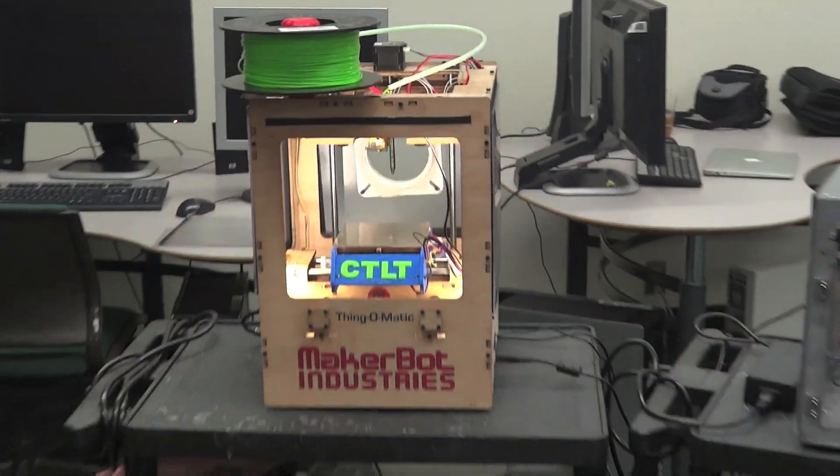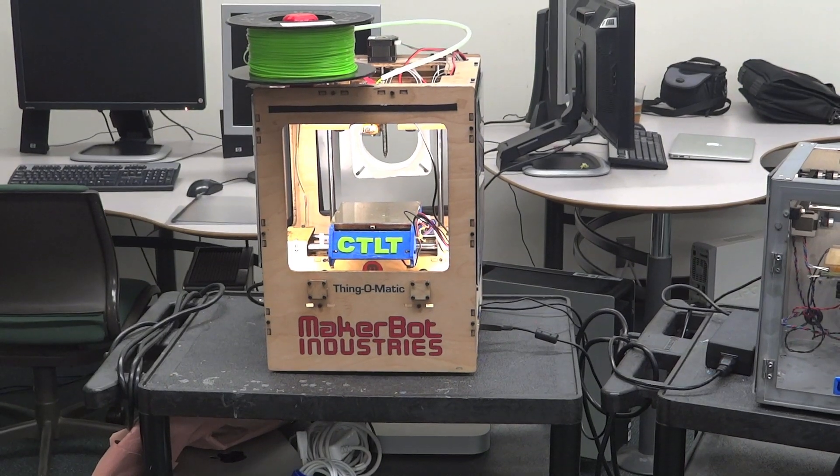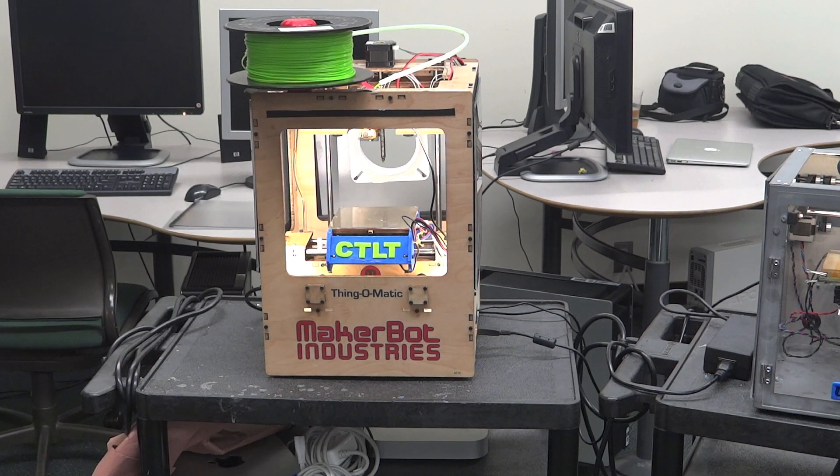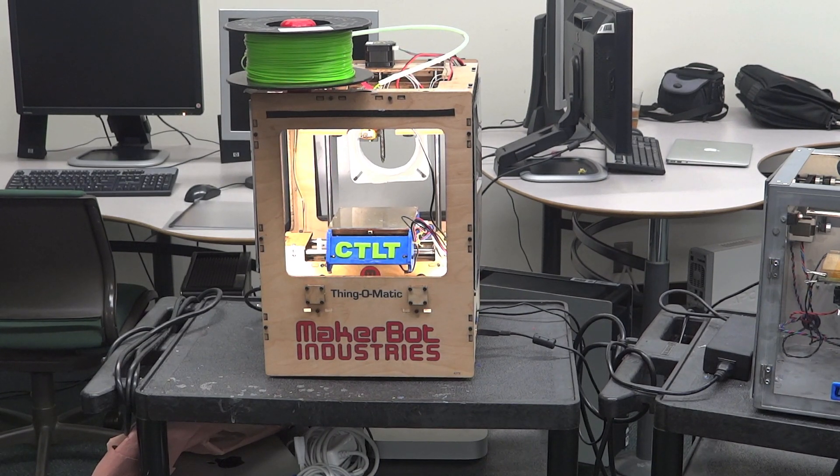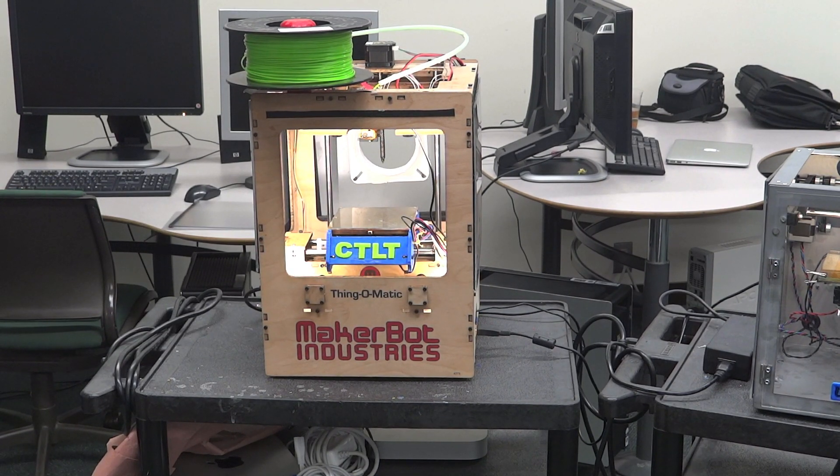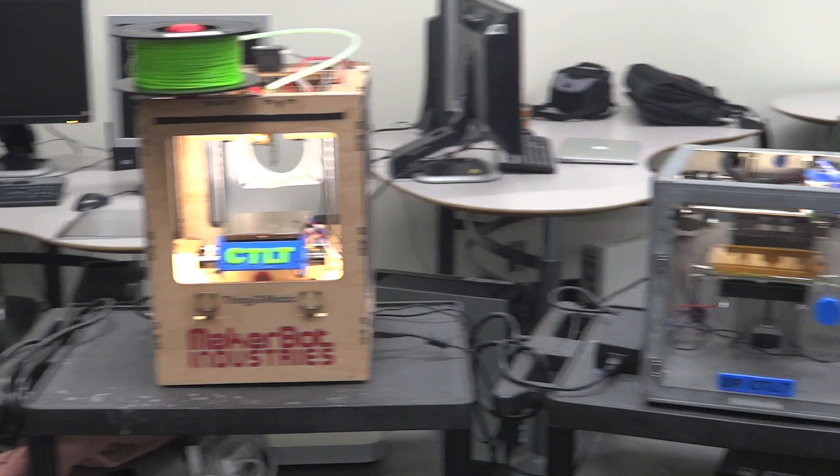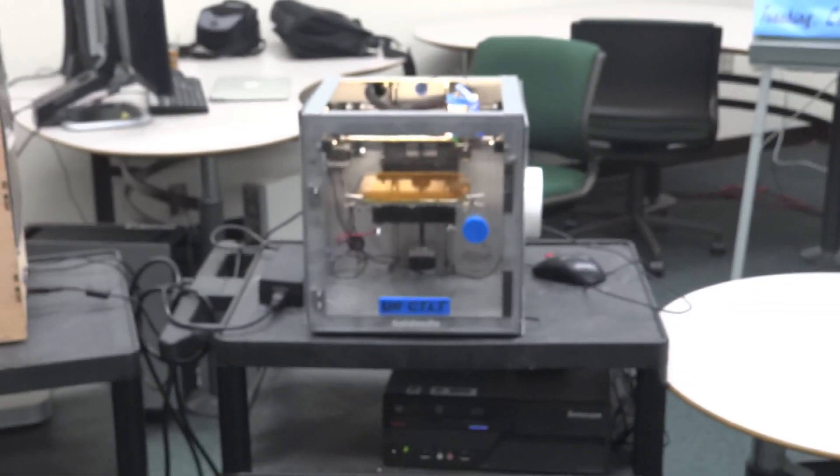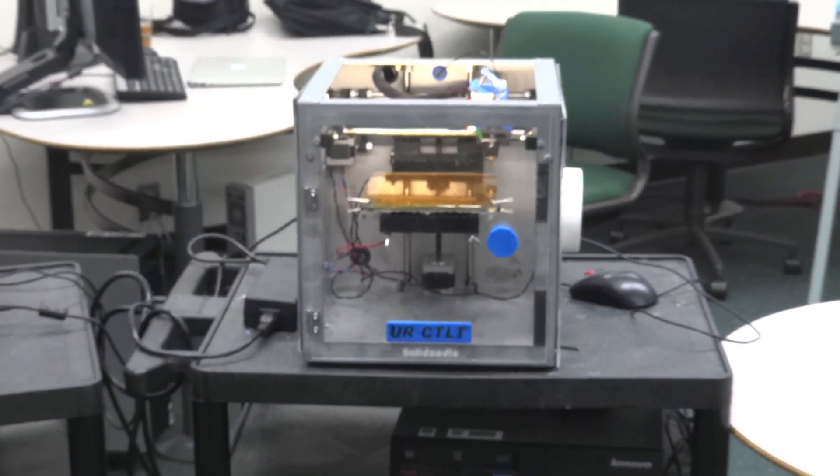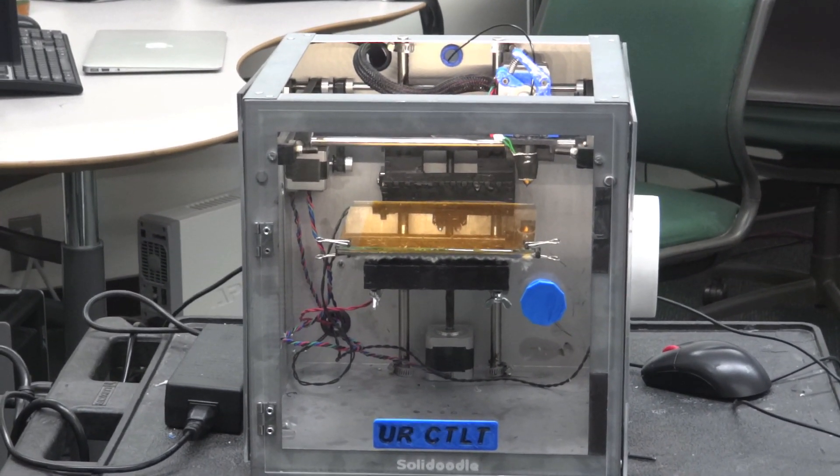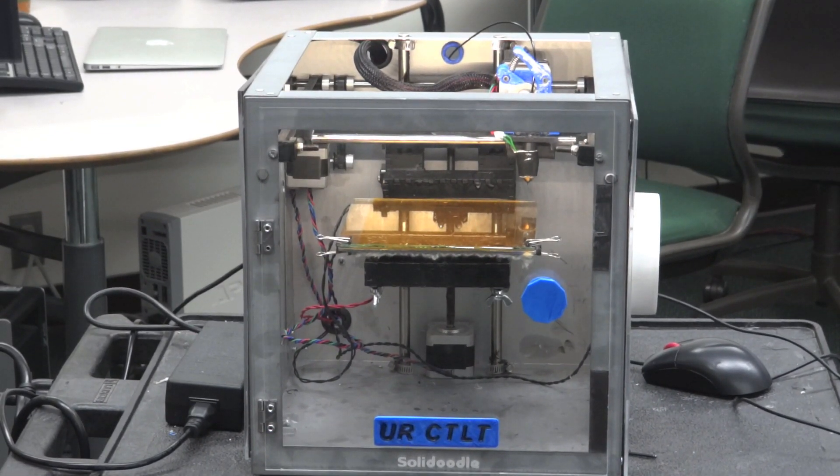We started with a MakerBot thing-o-matic in Thanksgiving of 2011, and we've been printing a fair amount with it. We usually print with the automatic build platform, which is a conveyor belt allowing automation of prints. Recently, we moved on to the SolidDoodle second-generation printer, and we've done some modifications as well.